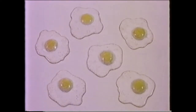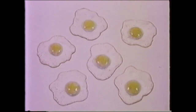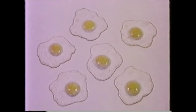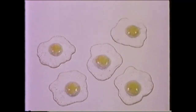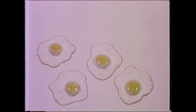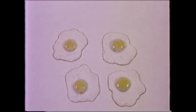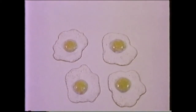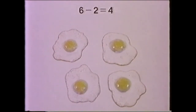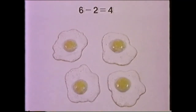Now, how many eggs do we have here? One, two, three, four, five, six — six eggs. Now let's take away two again: one, two. And how many are left? One, two, three, four — there are four left. So we can say that six take away two leaves four. Let's state this as a mathematical sentence. Take away is written with a little line like this — it's called a minus sign. It simply means take away. Can you read what it says there? Six take away two equals four. Or: six minus two equals four.